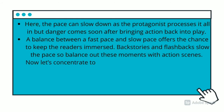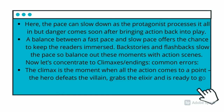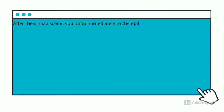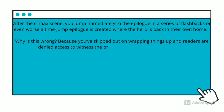Now let's talk about the climax and flash endings and common errors. The climax is the moment where all action comes to a point — the hero defeats the villain and is ready to go back home. This is followed by the ending where the hero must decide to stay or leave. Common errors include: first, defeating the villain too easily; second, the villain getting defeated too quickly. Another common error is jumping immediately to the epilogue after the climax with a time-jump, leaving out the wrap-up — readers are then denied access to the protagonist's decision to stay or leave.